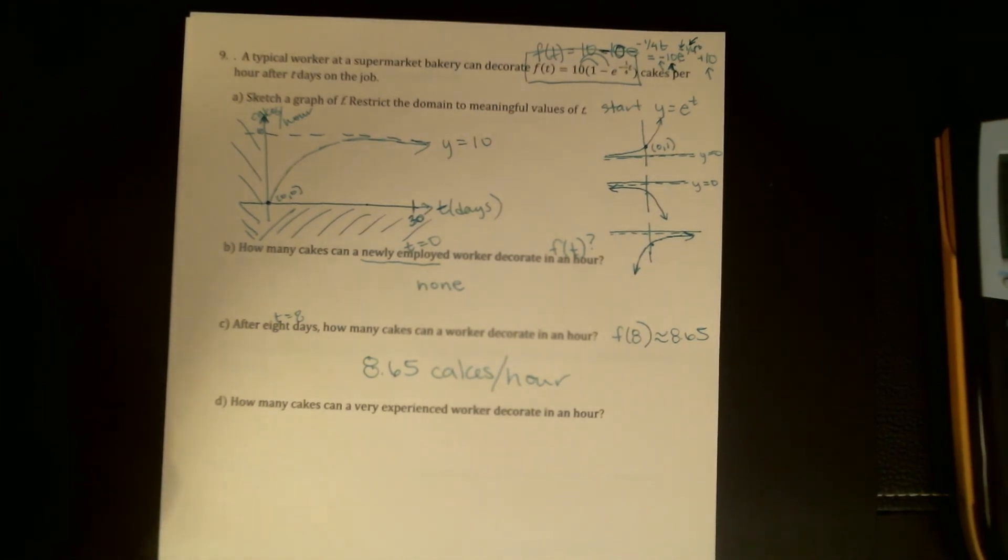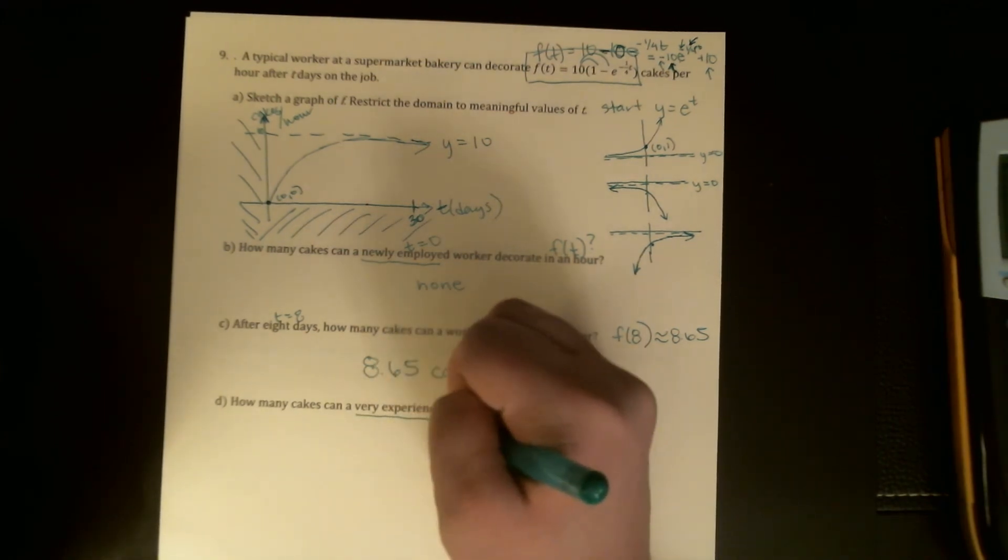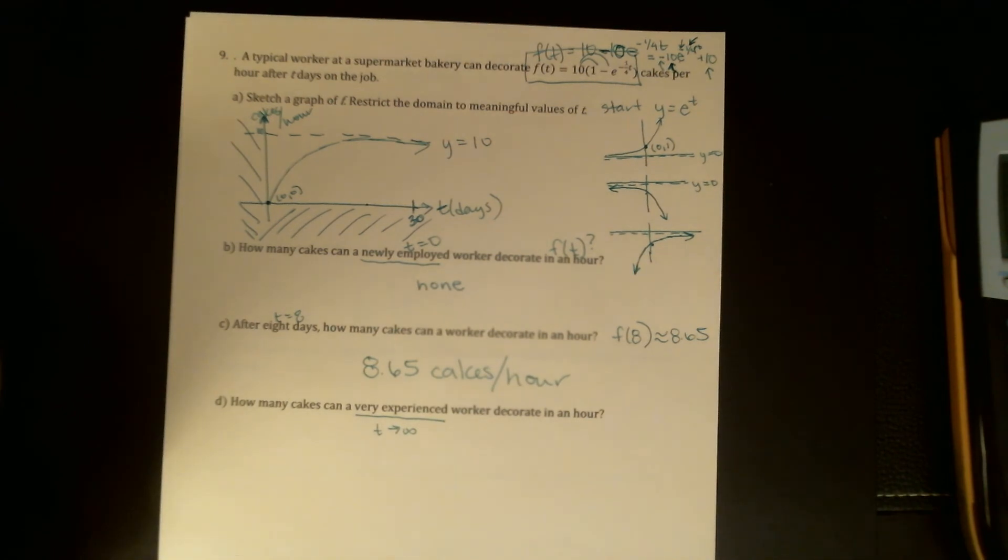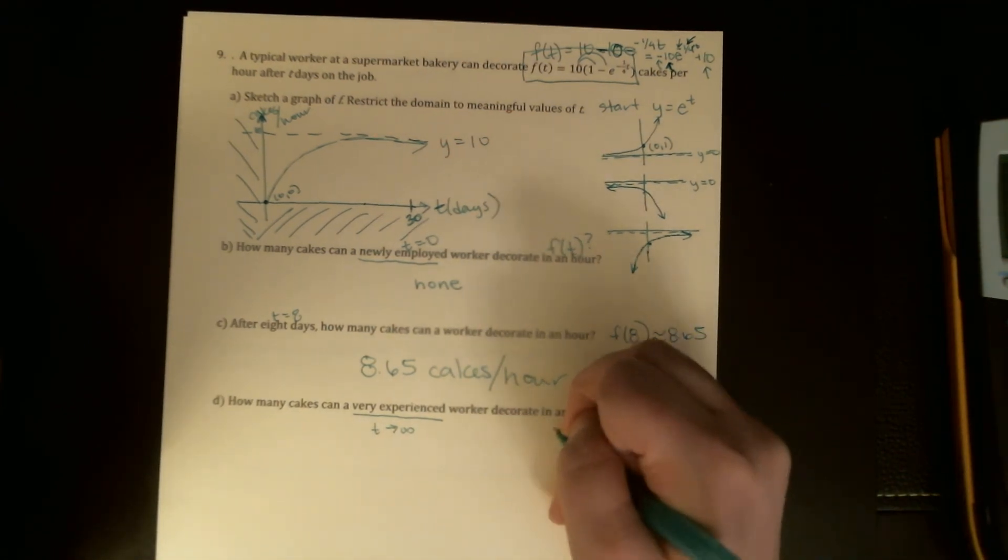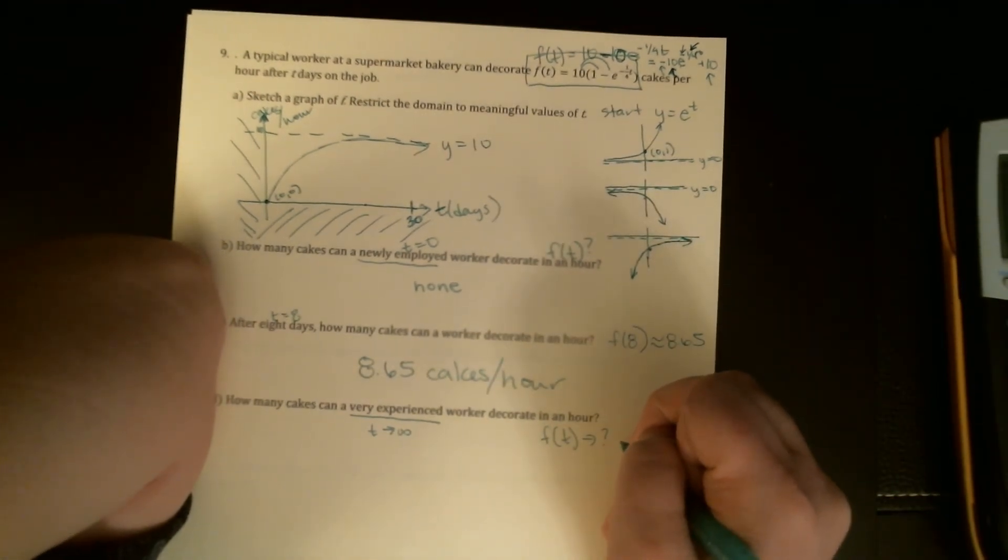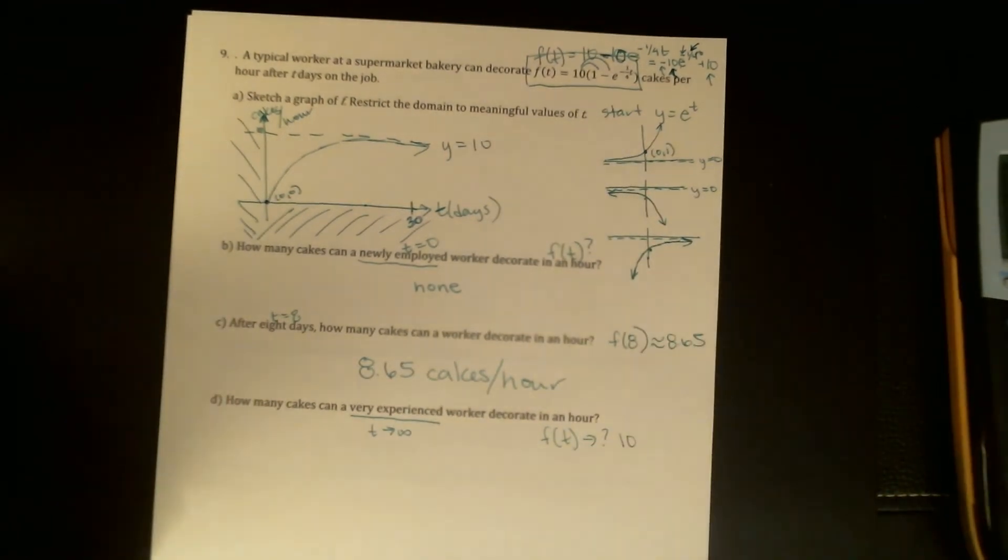Okay, how many cakes can a very experienced worker decorate in an hour? So what this is getting at, the very experienced, is what happens as t gets really, really big. So they've been there longer and longer and longer. What is happening to f(t)? And this is actually just getting at our horizontal asymptote. So the answer here is that f(t) is getting close to 10.